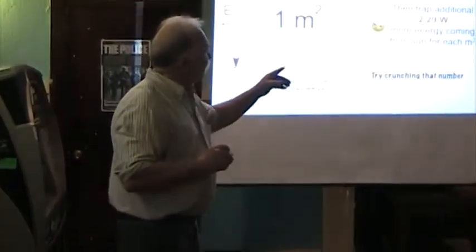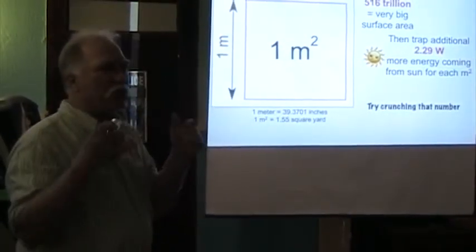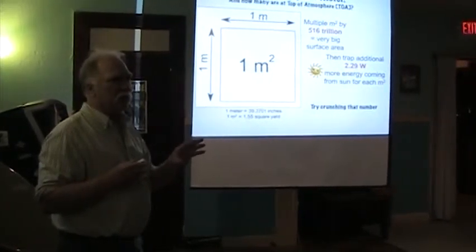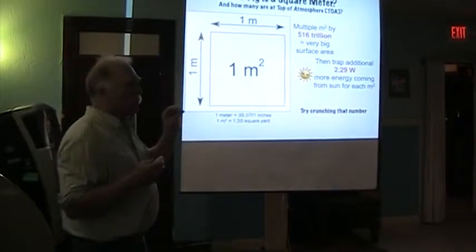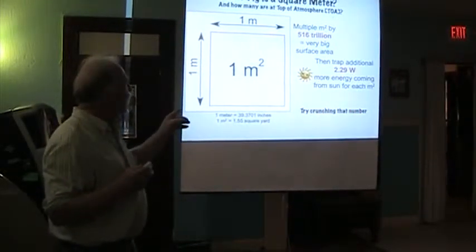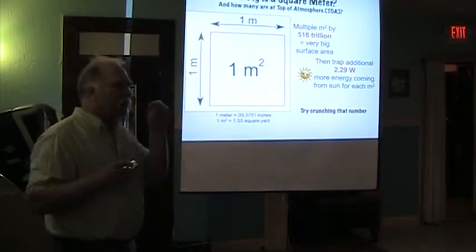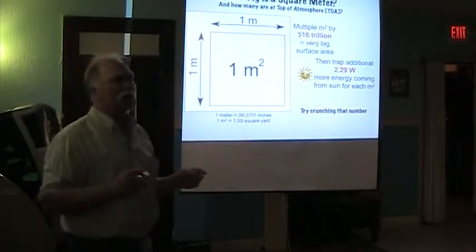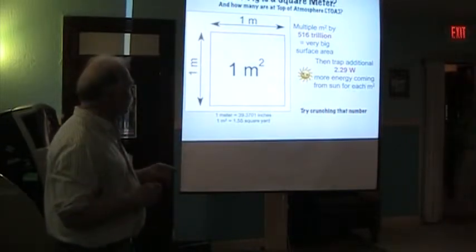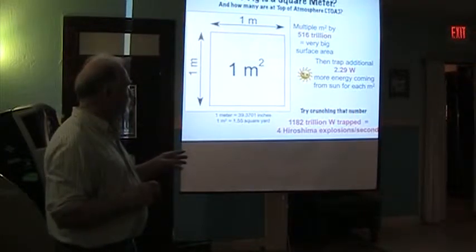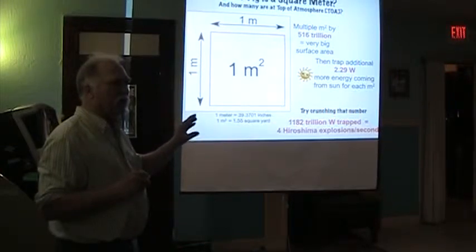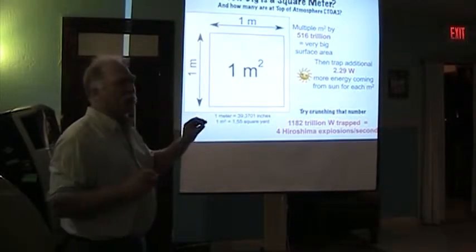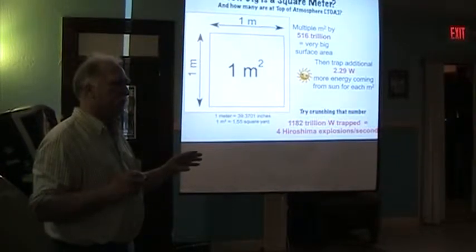The amount of additional energy being trapped from exiting the Earth is 2.29 watts per square meter. That seems like a very tiny amount — like a little Christmas light. But there are a lot of square meters; in fact, there are 516 trillion of them at the top of the atmosphere. So you multiply the two together and you get a very large number. You can equate that to the energy of four Hiroshima weapons — about 15 or 16 kilotons of TNT — per second. That's the amount of heat energy being added to the globe, and that's an easy number to remember.